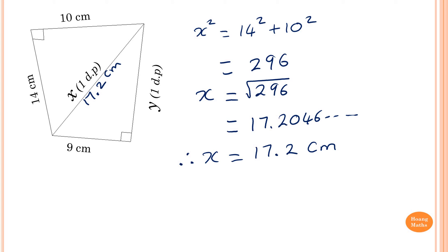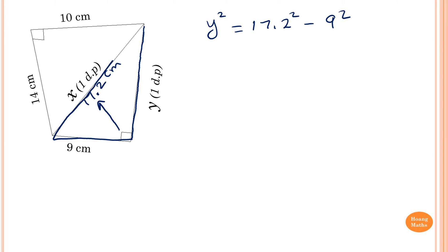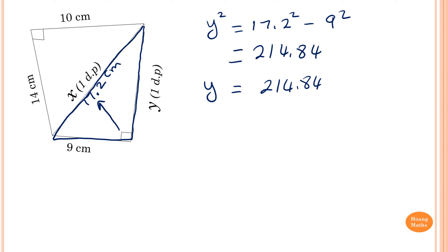Now to find y, we know this is the hypotenuse, so y is a shorter length, so we subtract. So y squared is equal to 17.2 squared minus 9 squared, focusing on this triangle. That equals 214.84, and the square root of that is 14.6574 and so on, but rounding to one decimal place.